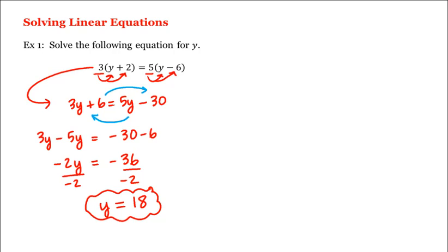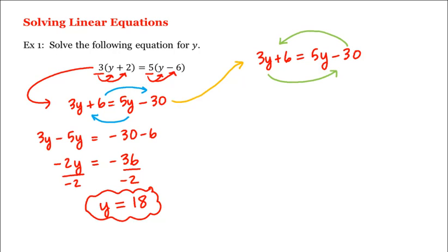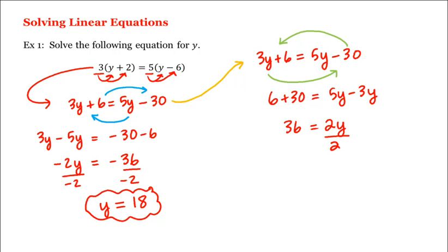Now if we didn't want to work with all of these negatives, we could have started the same way by distributing the 3 and the 5, giving us 3y plus 6 is equal to 5y minus 30. But now if we bring the 3y to the right and the negative 30 to the left, we get 6 plus 30 is equal to 5y minus 3y, or 36 is equal to 2y. Dividing by 2 gives us the same answer of y is equal to 18, but we didn't have to work with all those negatives.